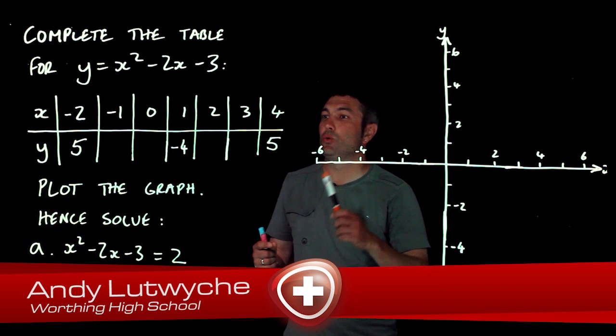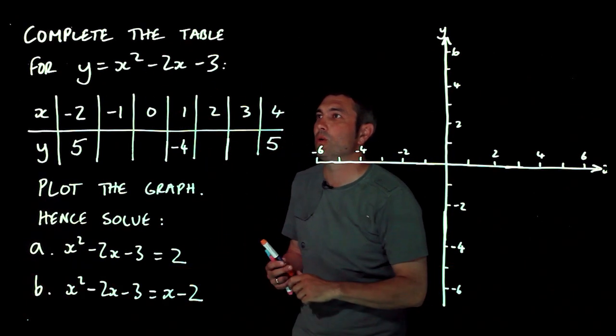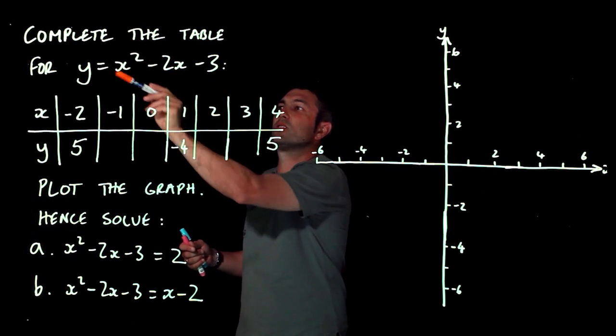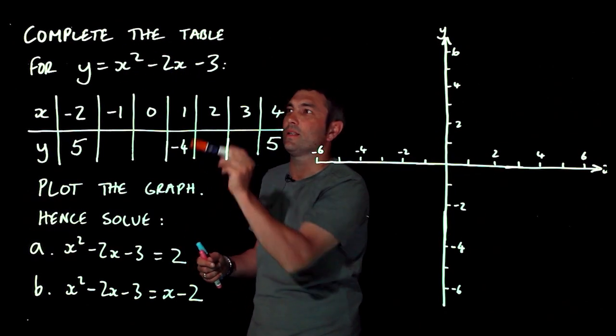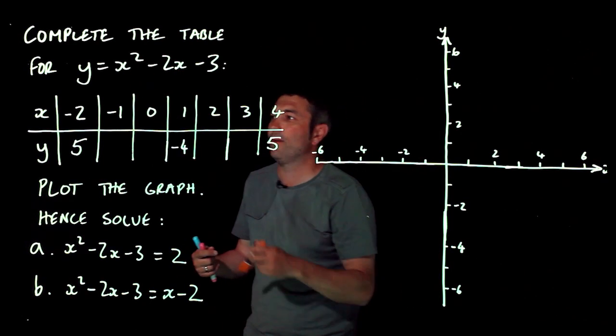Right, in this question we're asked to draw a graph of y equals x squared minus 2x minus 3. Now, because the highest power of x is squared, this is called a quadratic. So keep an eye out for that word. It might come up. You might have heard your teacher say it.